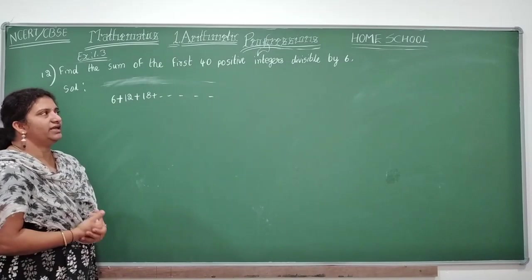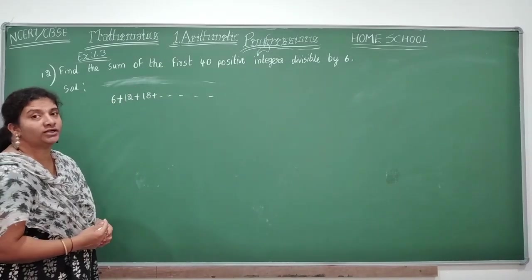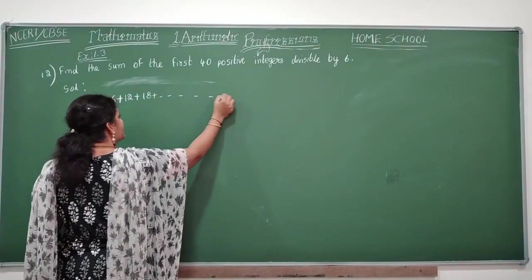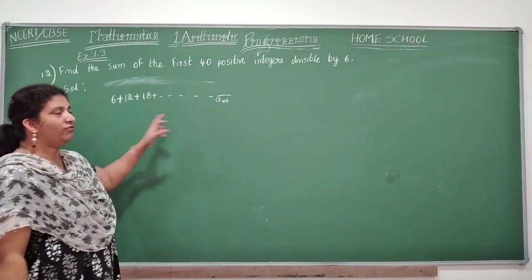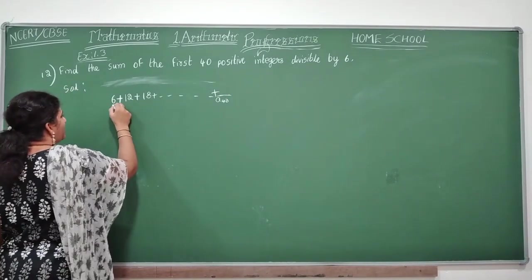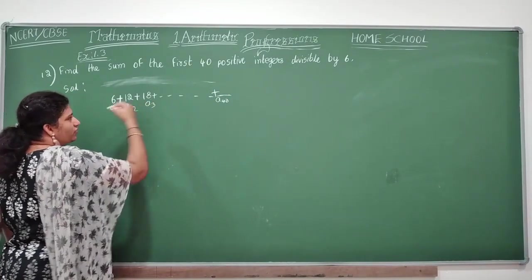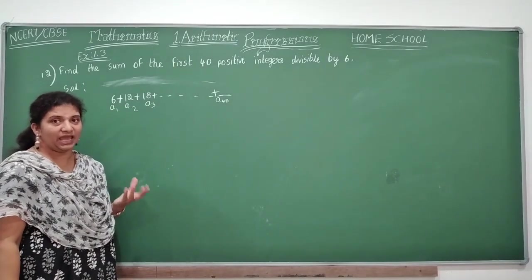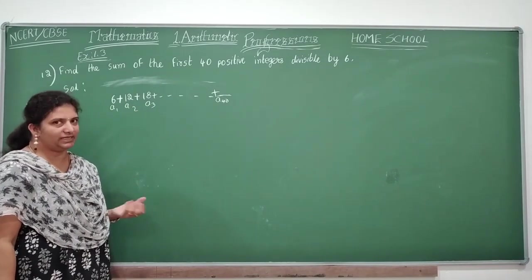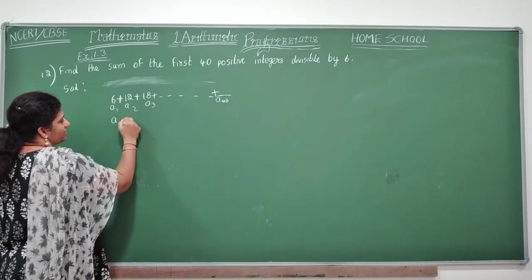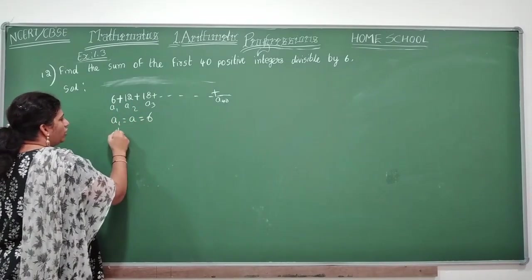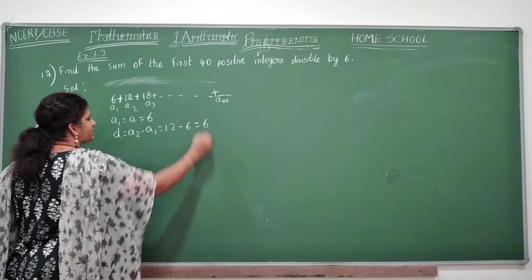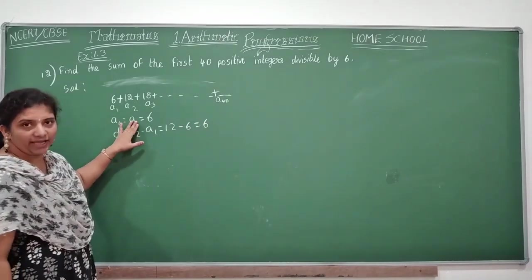In these integers, which are the numbers which are divisible by 6? I hope everybody knows 6th table, right? So now 6, 6 twos are 12, 6 threes are 18, so on. You should never take like this. Children make your mind to understand carefully. First 40 positive integers, your mind will say 1, 2, 3, 4, but not this. There is a condition - the numbers which are divisible by 6. So this is your series. Let's start numbering a1, a2, a3.